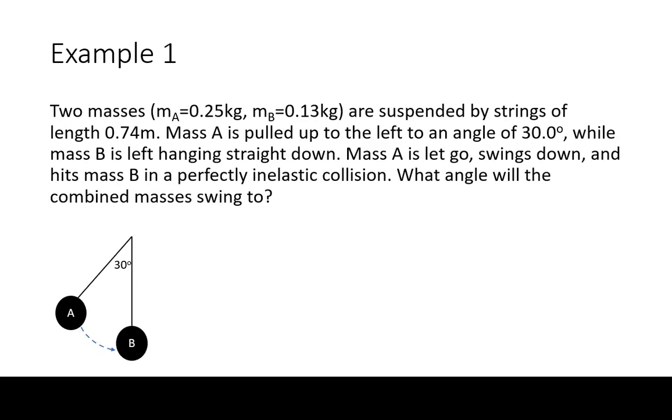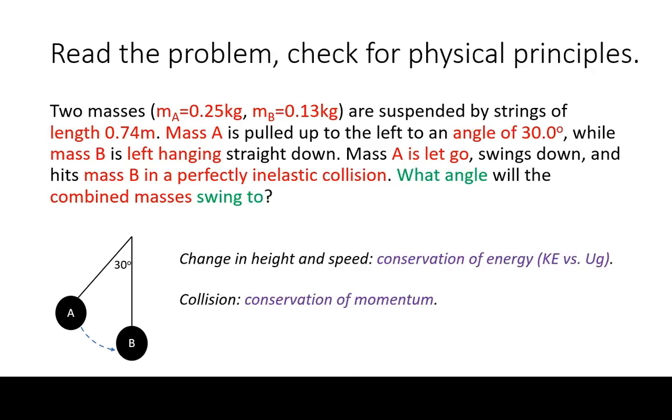In the first example, we will consider two balls hanging from strings. One is hanging straight down, the other is initially pulled to the side. Notice that there are two principles in play here. Because there are changes of height and speed involved, we will need to use conservation of energy. We will read the problem for the variables and elements involving the relevant energies.